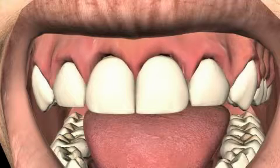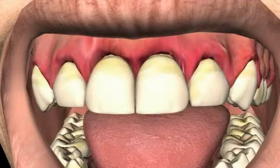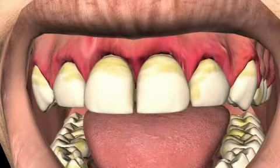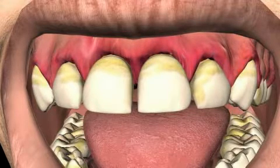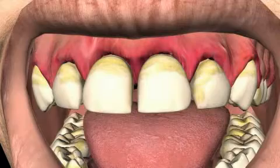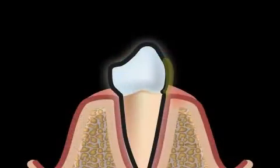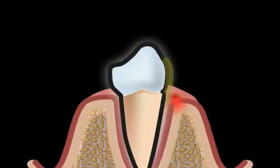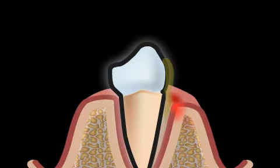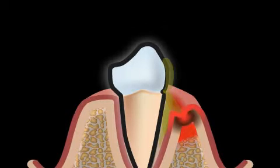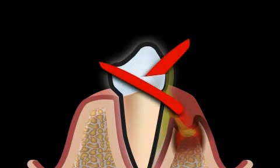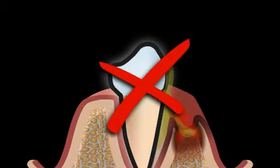Periodontitis, which is still often erroneously called periodontosis, is the official name for the abnormal inflammation of the periodontal apparatus. This inflammation invariably, and in most cases painlessly, leads to the loss of bone over the years. As can be seen in this animation, the result is loss of teeth.